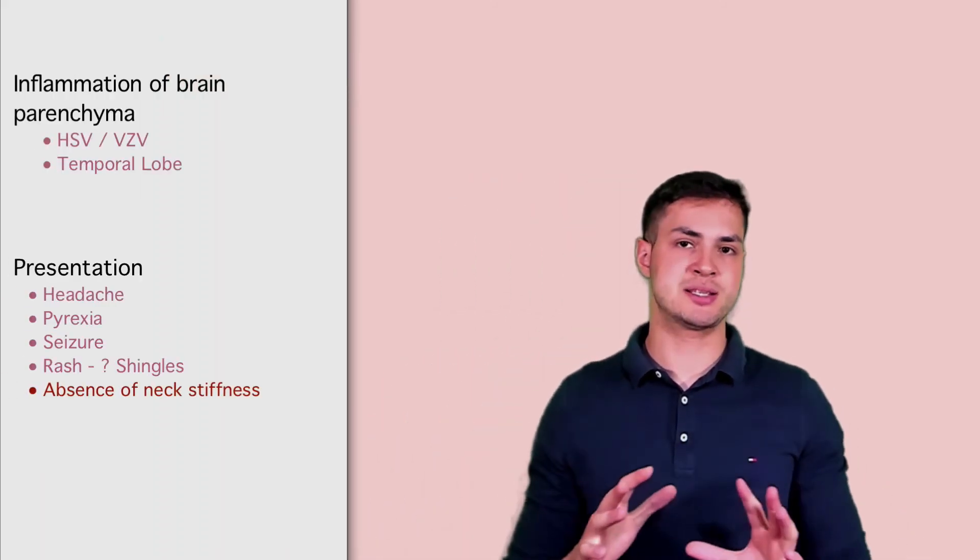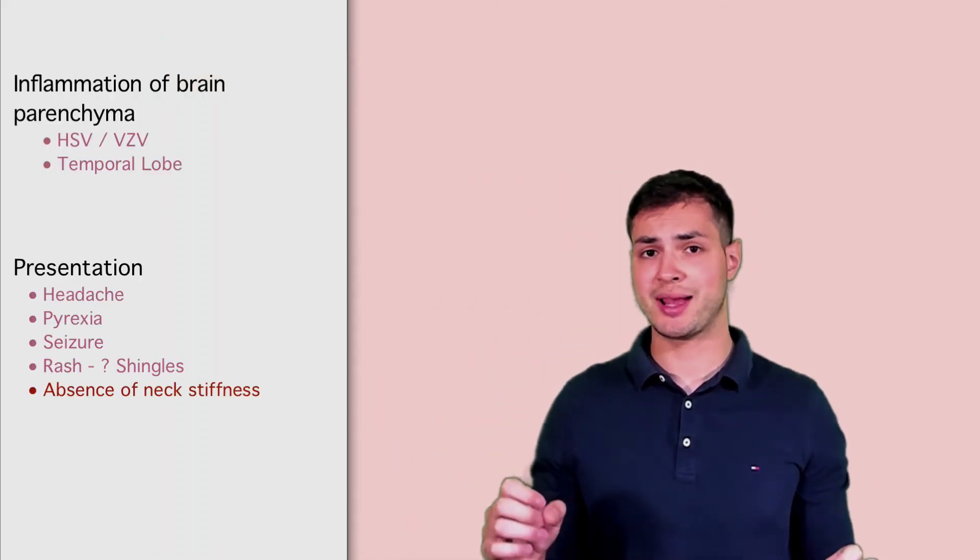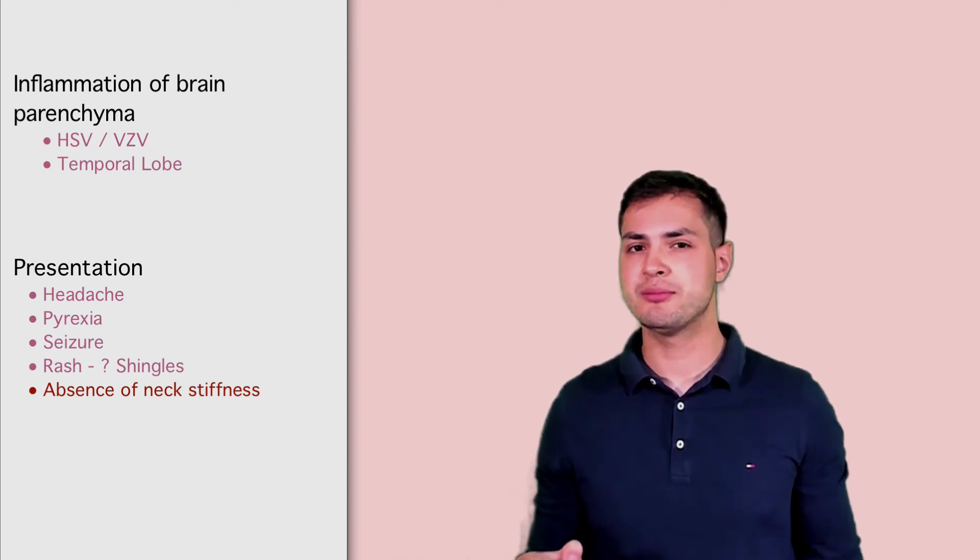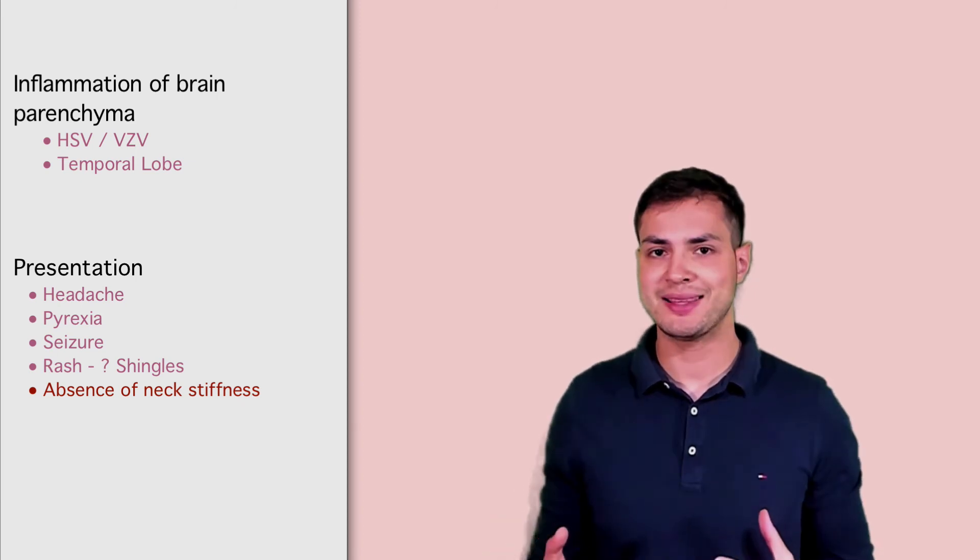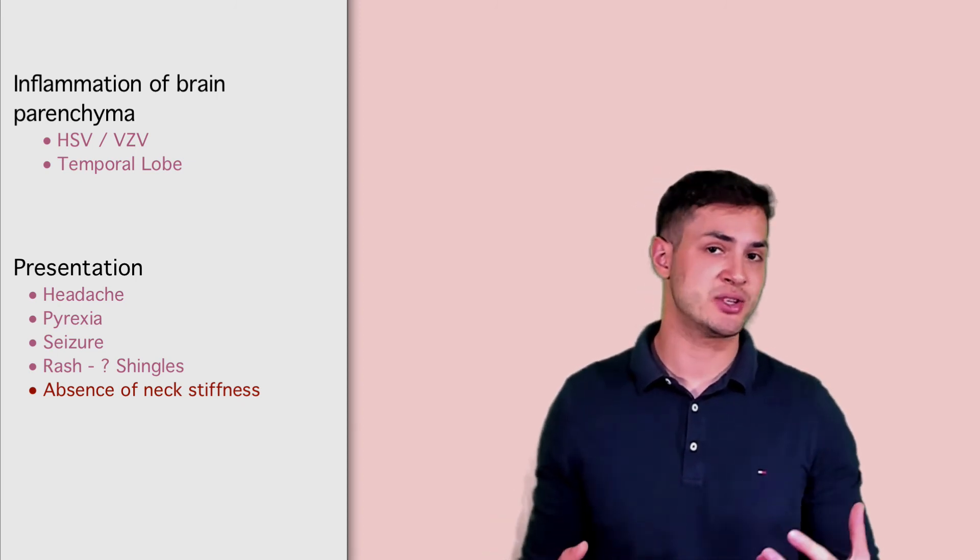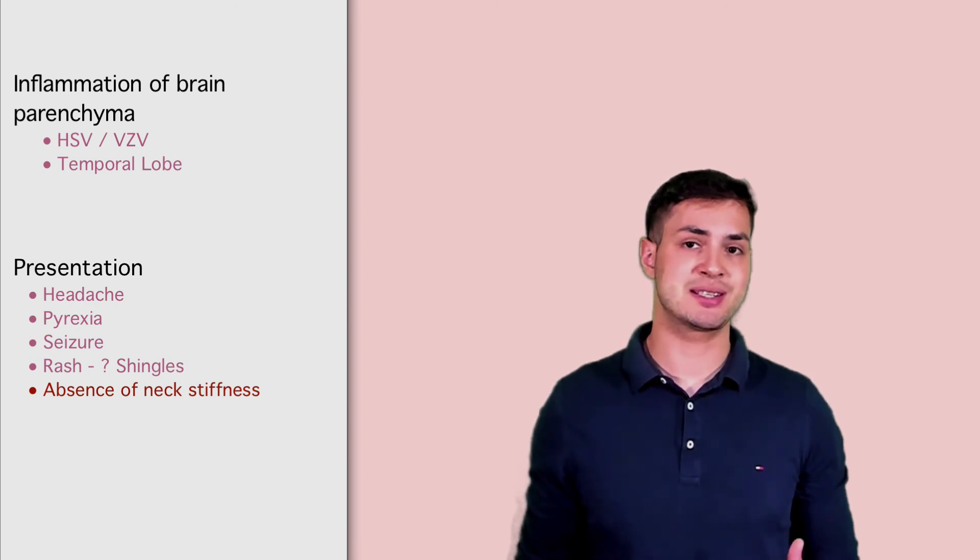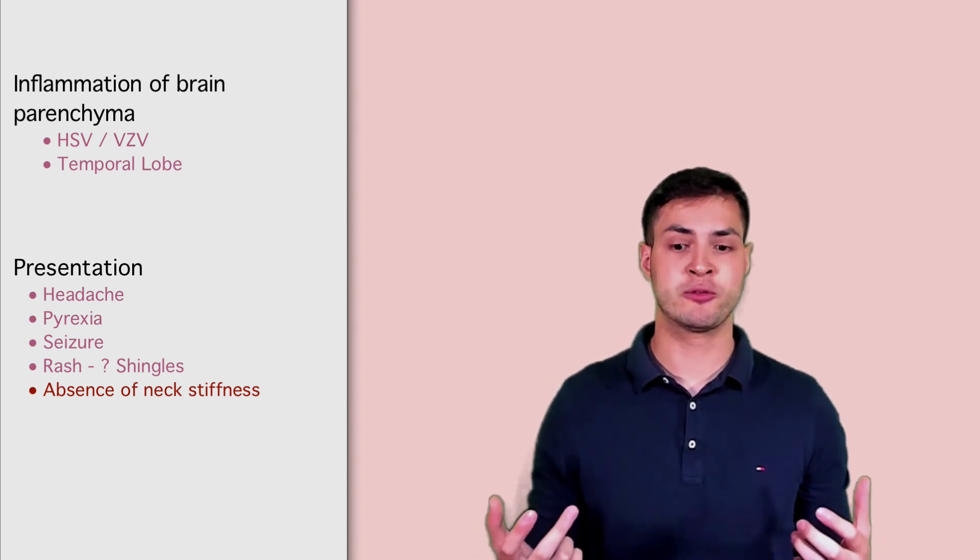And finally, the last disease we'll cover in part one of the series is encephalitis. Encephalitis is inflammation of the brain parenchyma. It's not of the meninges, so you're going to get an absence of neck stiffness. Their neck is going to be completely fine, and that's a really important sign you find in history and examination. Encephalitis is caused by a virus. It's usually caused by herpes simplex or varicella zoster, and it's usually in patients that might be immunocompromised.